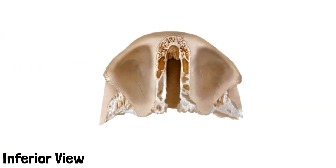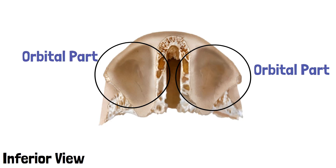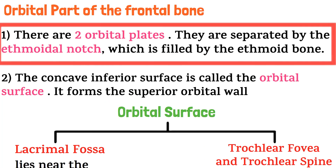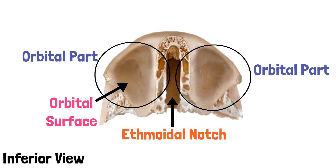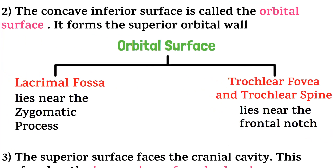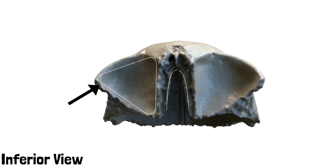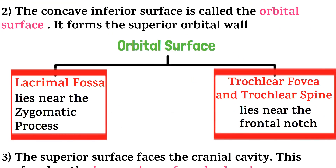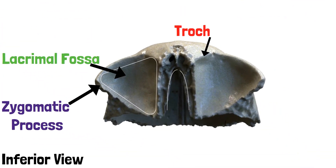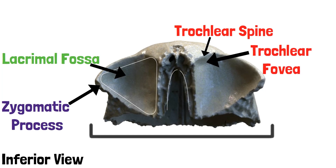This is the inferior view of the bone. These two parts encircled are the orbital parts, which contain the orbital plates. As discussed, these plates are separated by the ethmoidal notch. This concave inferior surface is called the orbital surface. The orbital surface has the lacrimal fossa, which lies near the zygomatic process. Another finding was the trochlear spine, and here you can see the trochlear fovea. This is the posterior border, which articulates with the sphenoid bone.